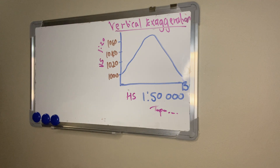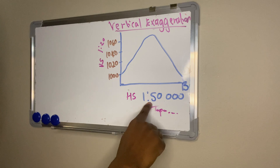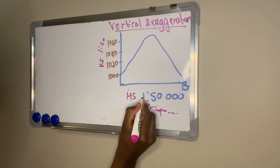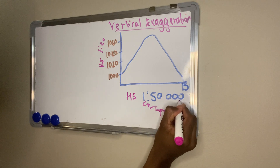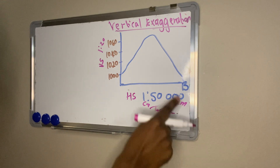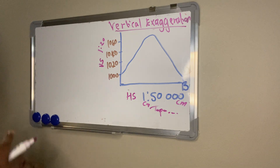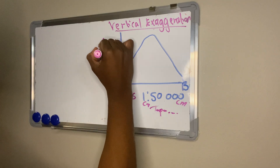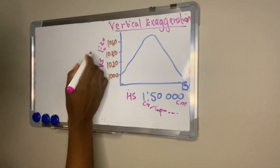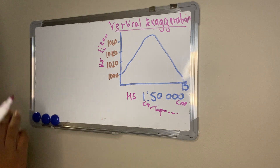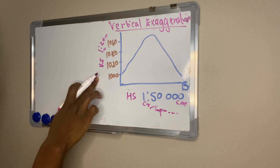You need to be careful here. The horizontal scale of 1 to 50,000 is in centimeters — one centimeter on the map represents 50,000 centimeters on the actual ground. But the vertical scale is not in centimeters; it is in meters. One centimeter on the map represents 20 meters on the ground.